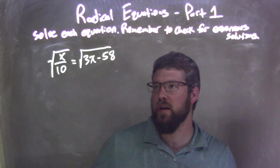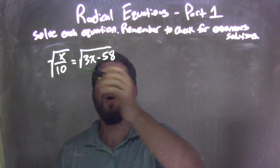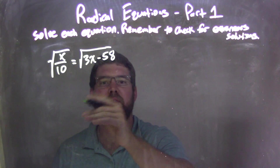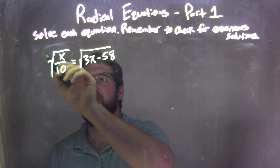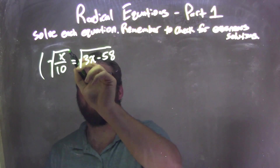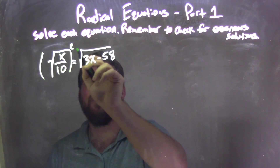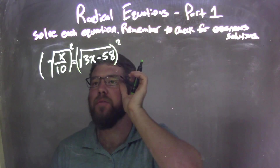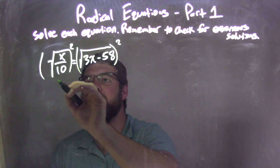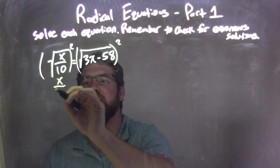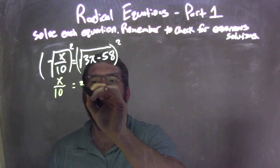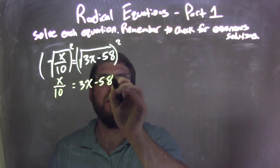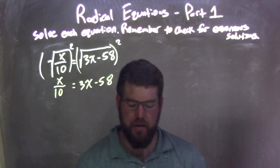Well, first thing, I want to square both sides. The square roots are already isolated, so squaring both sides will help me eliminate those square roots, leaving me with just x over 10 on the left and 3x minus 58 on the right.